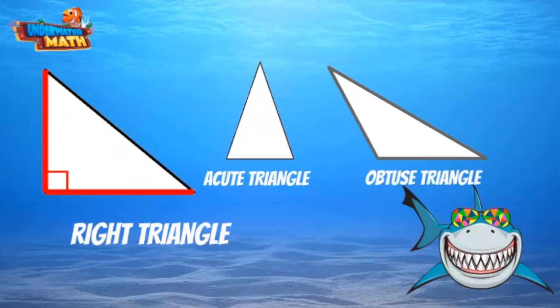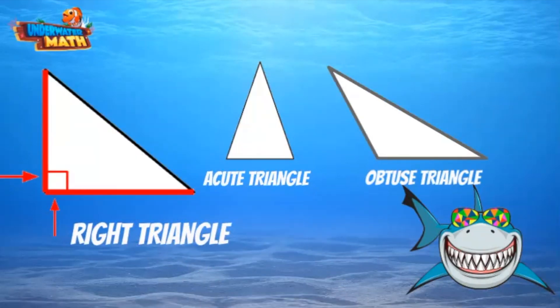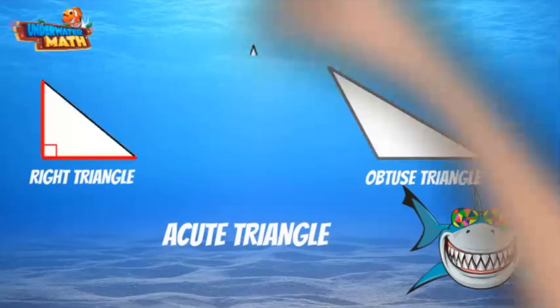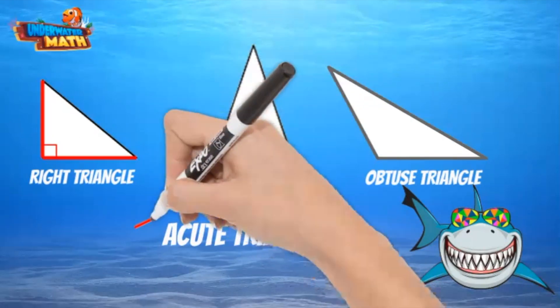A right triangle has two perpendicular lines that meet together to form a right angle. A right angle is exactly 90 degrees and is the key characteristic for a right triangle. Sometimes a 90-degree angle is indicated by a little square where the perpendicular lines meet. Next, let's talk about acute triangles.